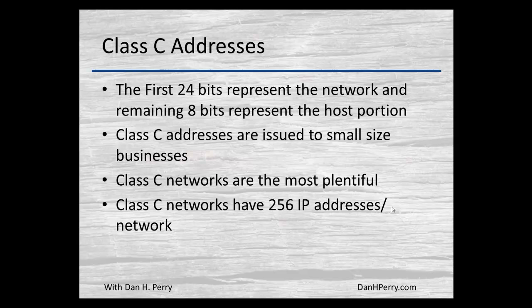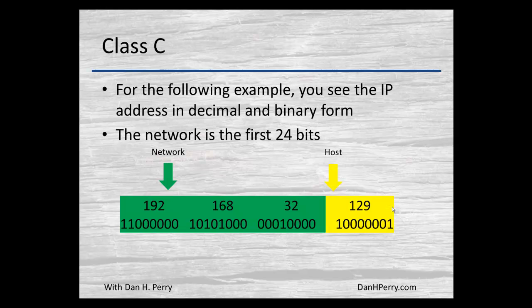There are more Class C networks than any other type due to their small nature — they're more plentiful. There are 256 IP addresses per network. Here we see an example of 192.168.32, with the first three octets, or first 24 bits, as the network portion and the last 8 bits reserved for the host.